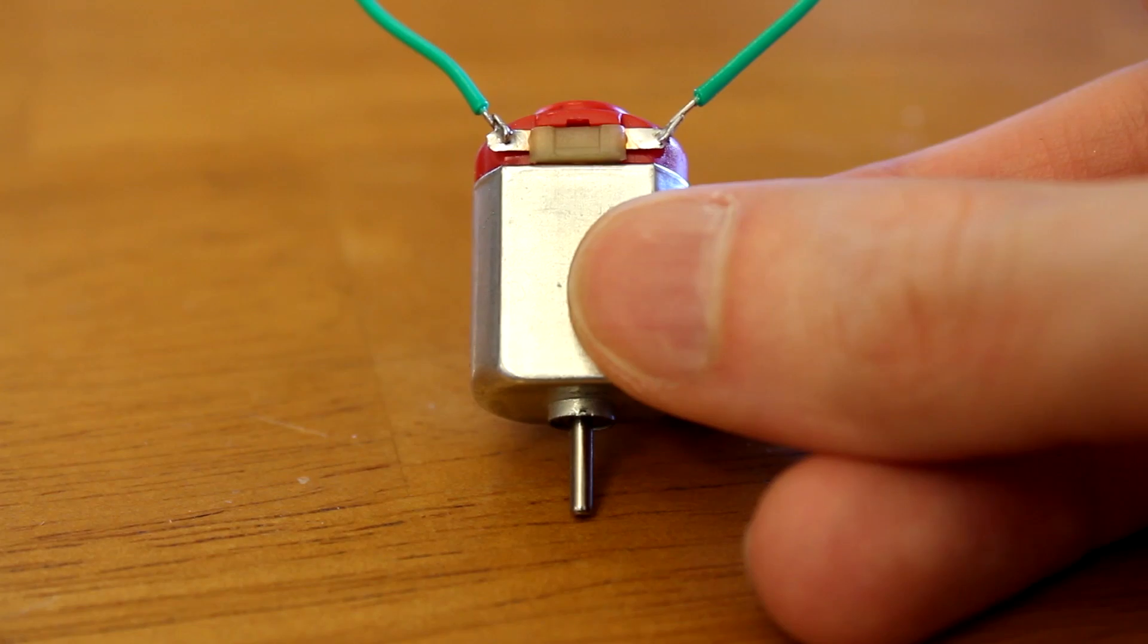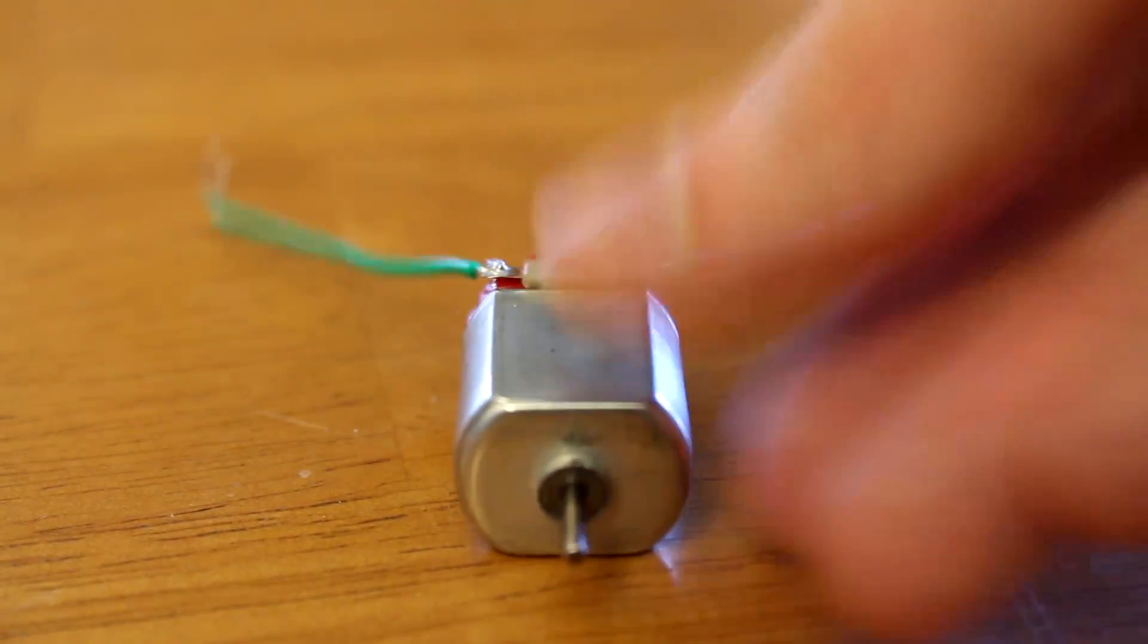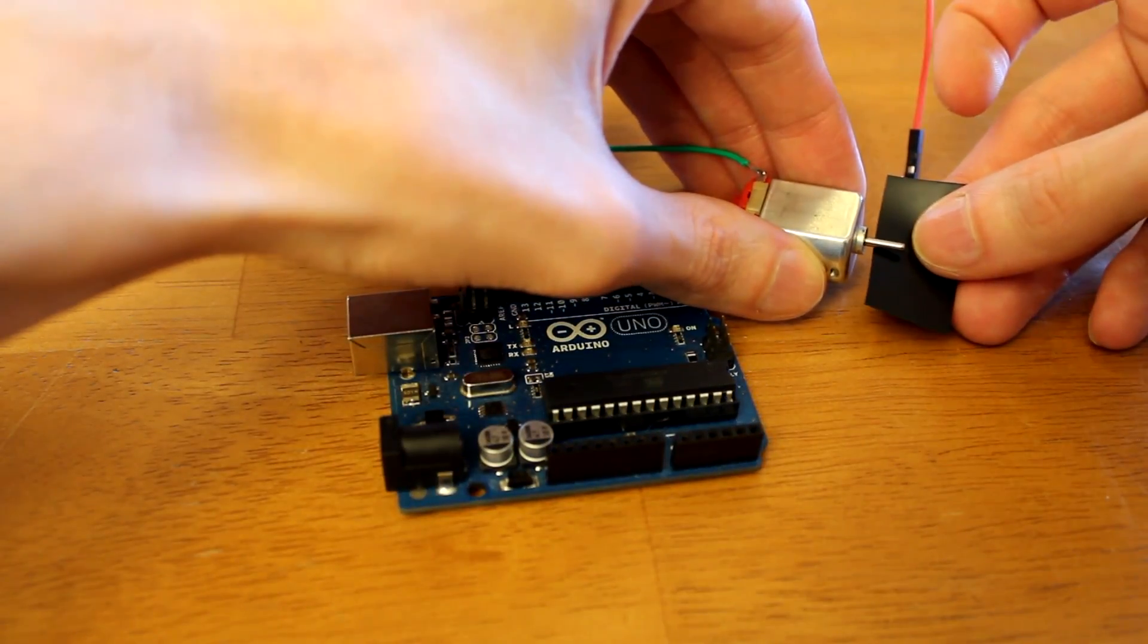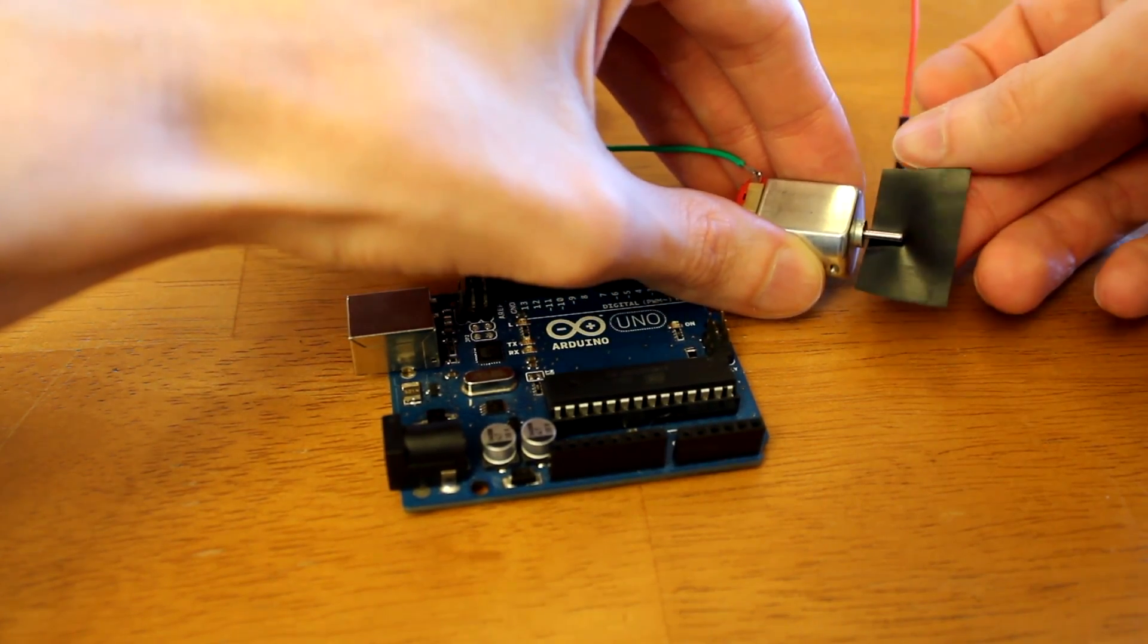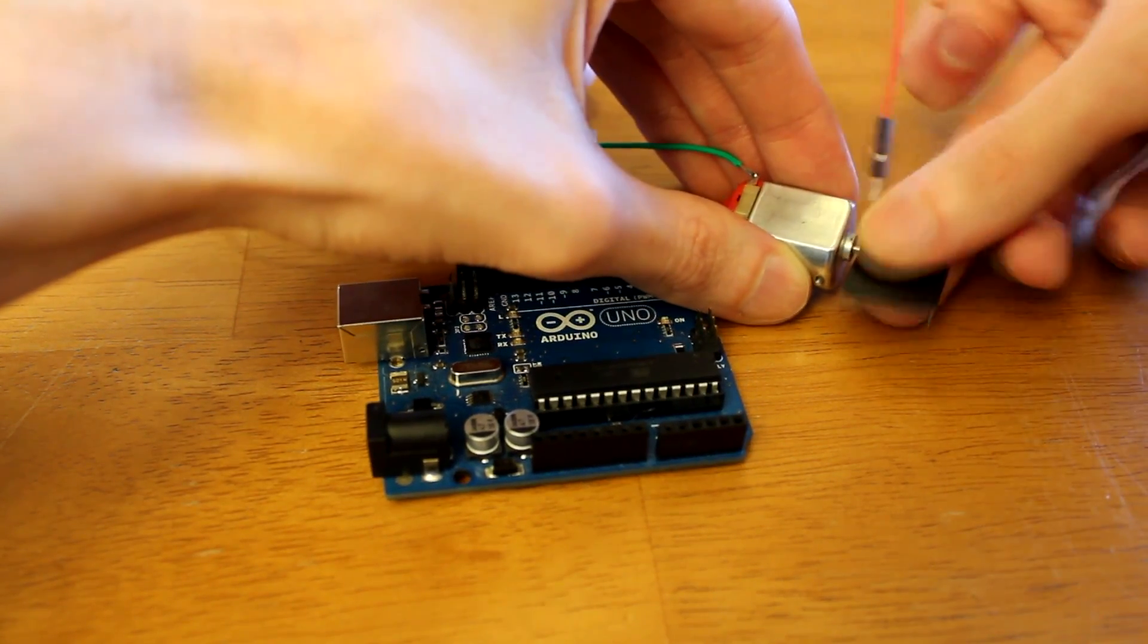DC motor. All I've done is soldered two green wires onto the end. I'm going to add some tape to the motor just so we can actually see it spinning here. This is just regular old electrical tape.